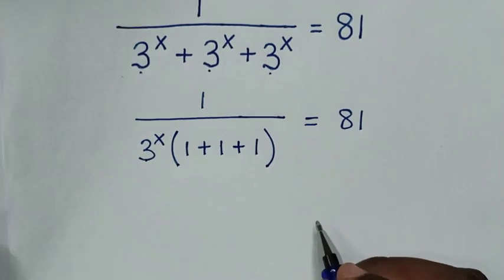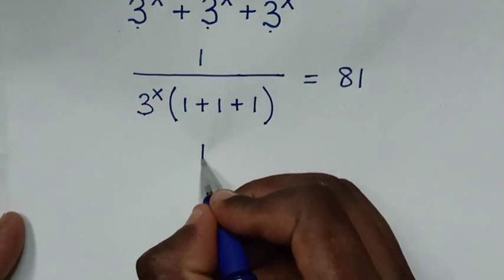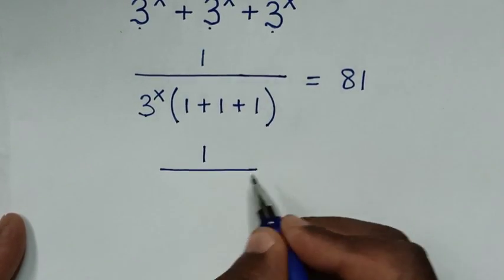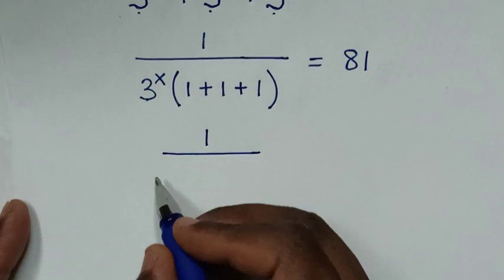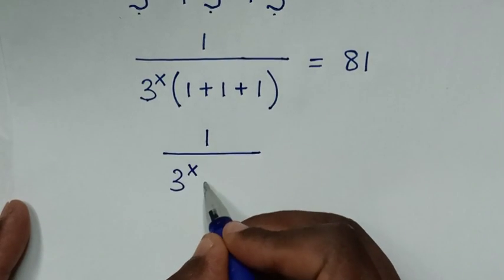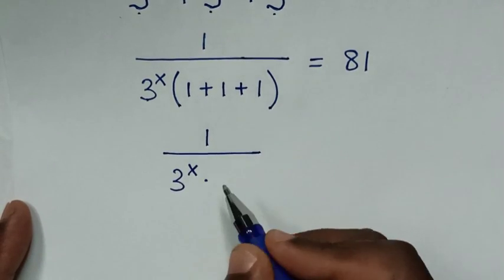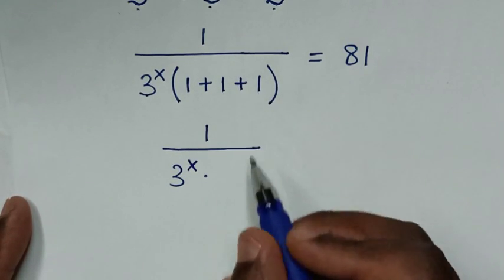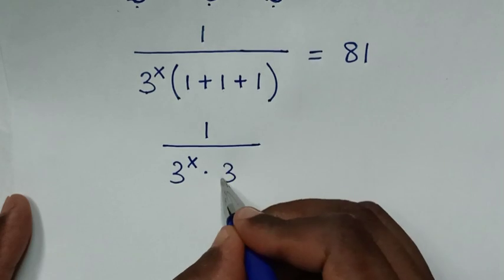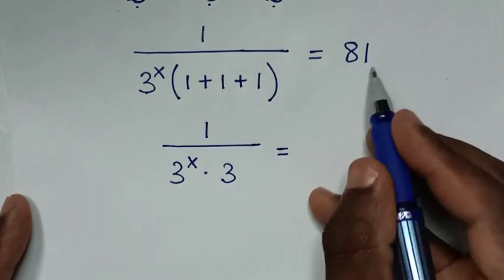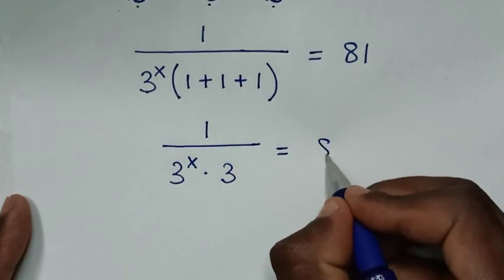In the next step, it will be 1 over 3^x, times 1 plus 1 plus 1, which is 3, is equal to 81.